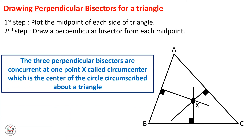The three perpendicular bisectors are concurrent at one point X called the circumcenter, which is the center of the circle circumscribed about the triangle. Later we will learn how to draw this circumscribed circle.